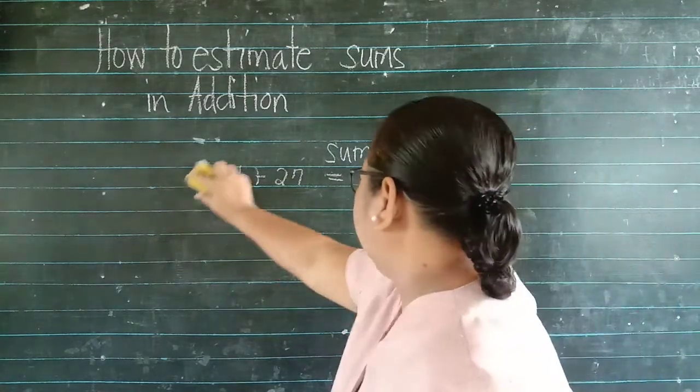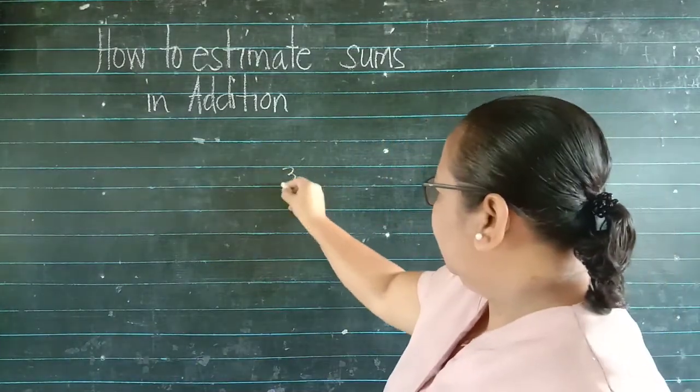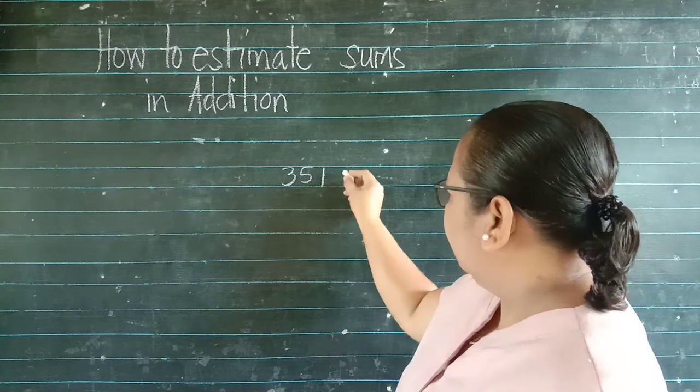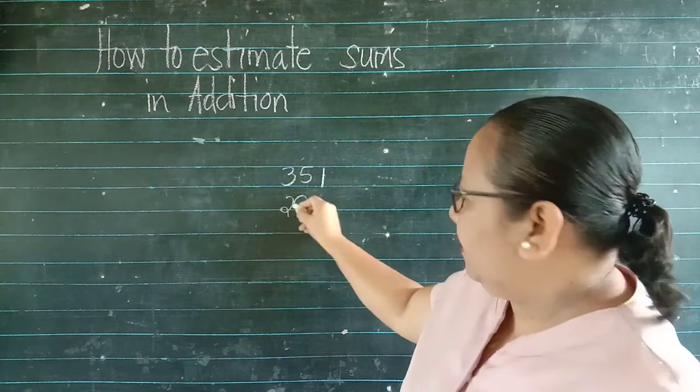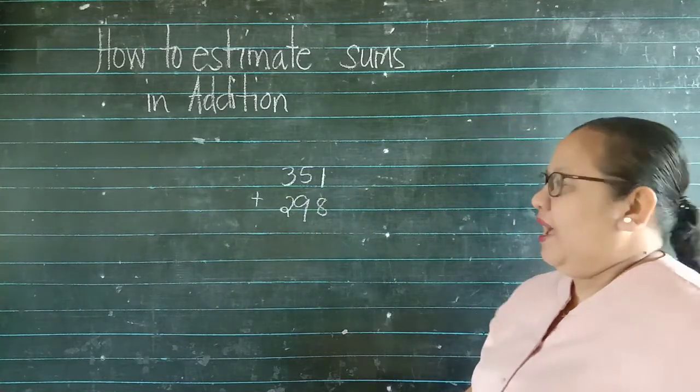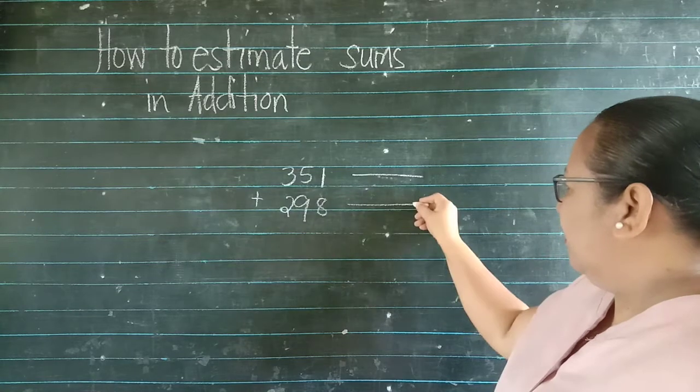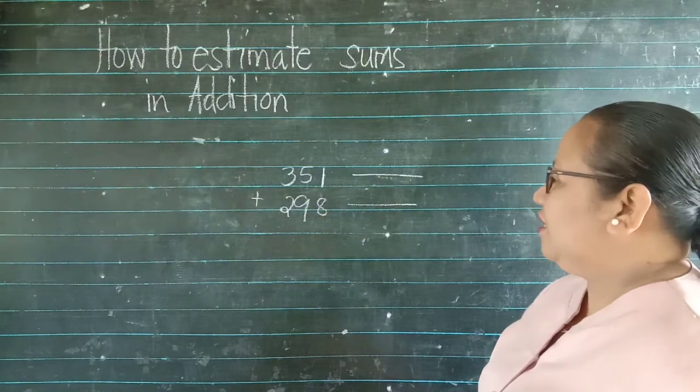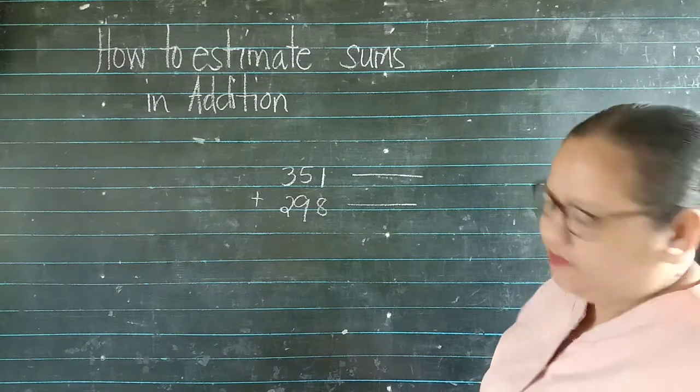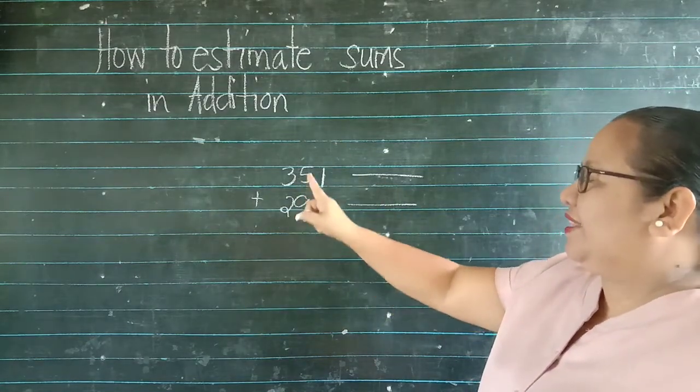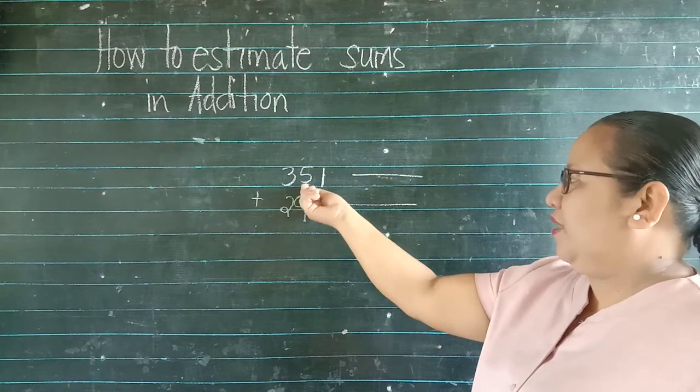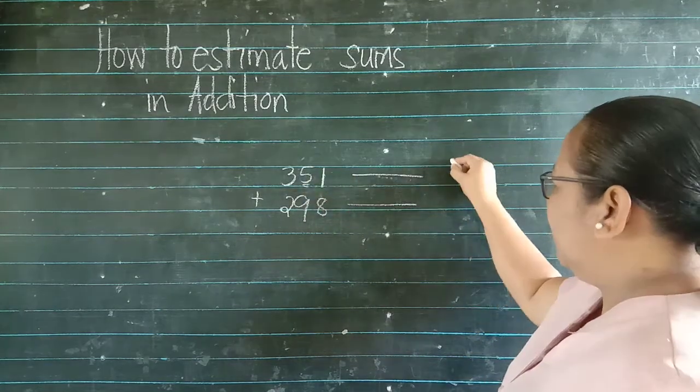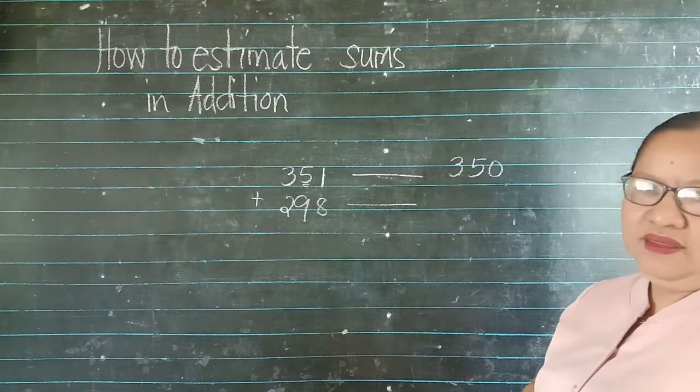Let's try another one. We have 351 plus 298. Last natin. Ang gagamitin na, round off muna. Ano ang round off ng 351 to the nearest place indicated? Magiging ano siya? Tens. Ano tayo ha? Nearest tens. Anong titignan natin dyan? Siyempre ito. Kasi yun ang may place value tens. Saan siya? Ano ang magiging number niya?